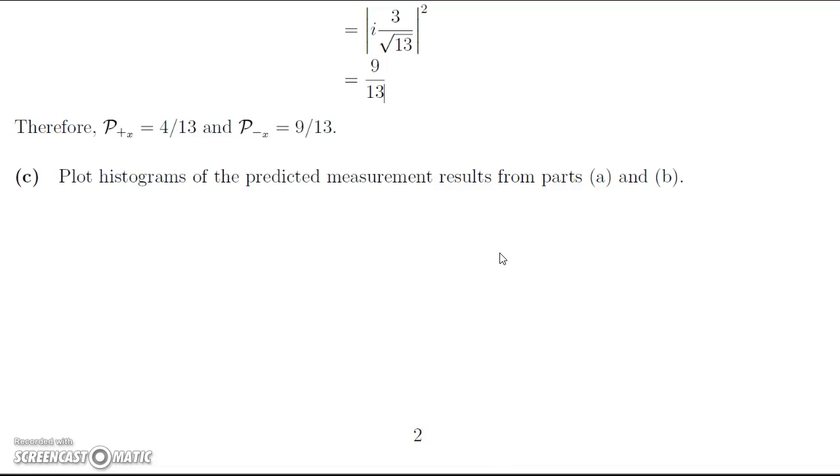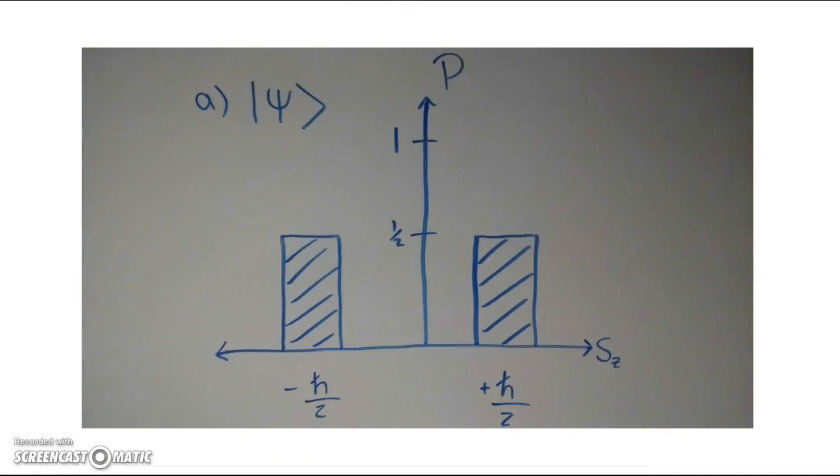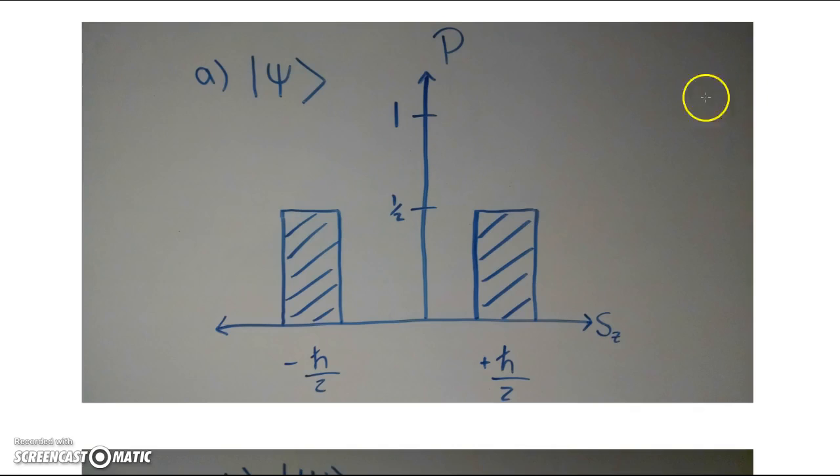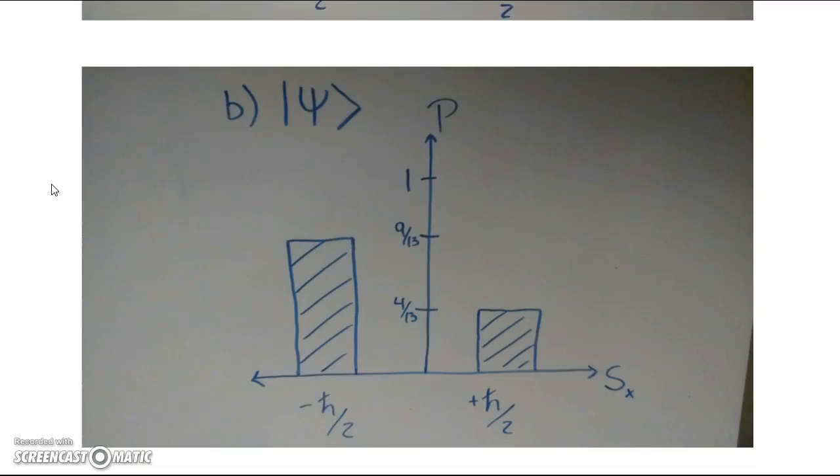The final thing we want to do is plot histograms of these predicted measurement results. Here we have two diagrams that were inserted in, done from a whiteboard. For part a, we'll just note that here we have the psi state measured at the top, and note that this is what this is for. We're measuring the z component spin, and we have the, up at the top, we have the total probability is going to be 1. So we have that marked off, and we have the spin up and spin down, here marked with the corresponding h-bar, and both of them are equal to 1.5.